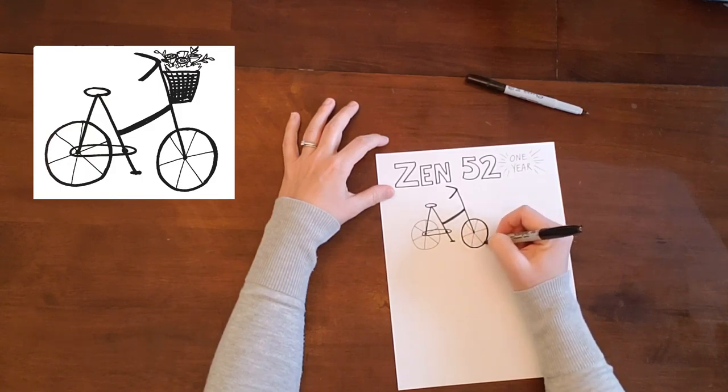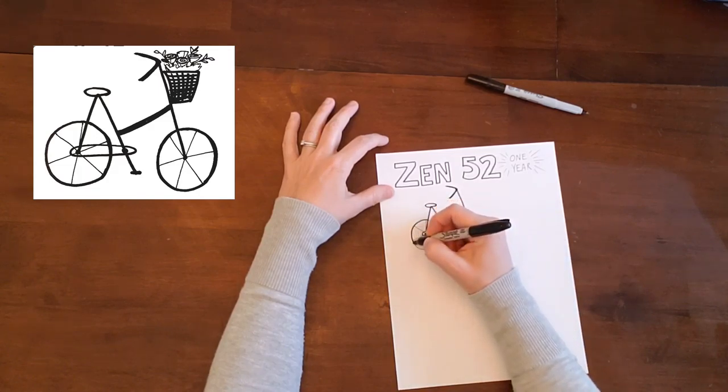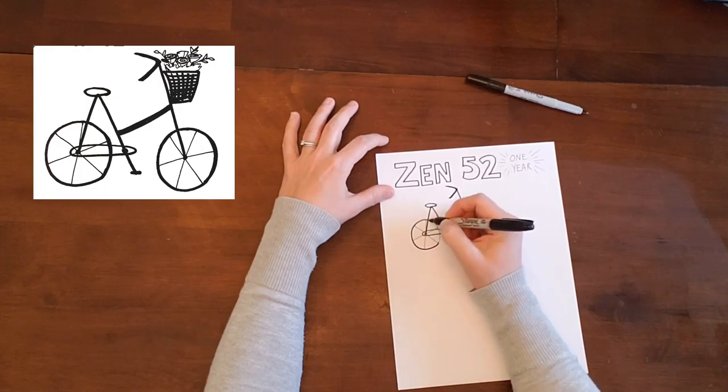Then I'm going to go around the wheels and put my rims and tires on. You can make these a little bit thicker. You could use colored markers if you wish to have a colored bike or just leave it black.